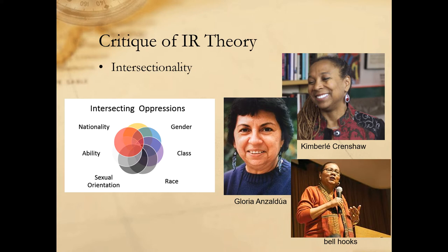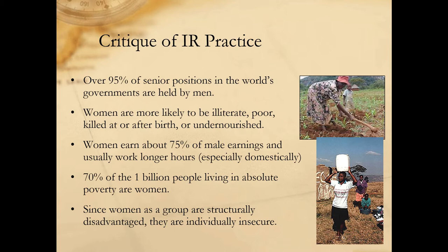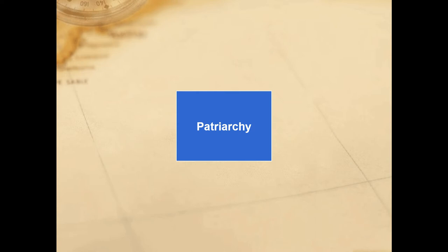The intersectional framework echoes Marxist feminist approaches to political economy, such as those advocated by Maria Mies and Vandana Shiva. For Marxist feminists, capitalism rests on the hyper-exploitation of women, particularly in the realm of social reproduction. Perhaps one of the most valuable contributions of intersectional feminist analysis is the way it highlights the various intersections or webs of power in international relations. Feminist IR scholars critique not just theories of IR but the practice of IR as well — noting that women are excluded from positions of authority, are more likely to be illiterate, poor, killed at birth, or undernourished, earn less than their male counterparts, and are more likely to live in poverty. These outcomes are not happenstance but are reflective of broader gendered relations that structurally disadvantage women and make them individually less secure.